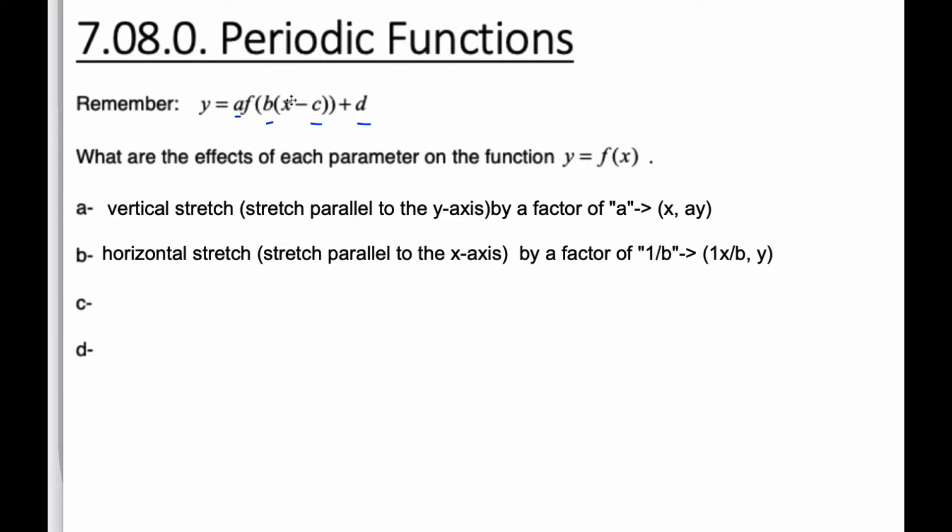And then if we move on to the c value, that is also inside the function, so it affects the x value. And it is a horizontal translation, or a horizontal shift, or you could also say a translation along vector c, 0. And again, it goes opposite. If it was x minus 1, that means it would go plus 1 to the right. It's opposite of what you would expect, because inside the function, it is your x value that is being changed.